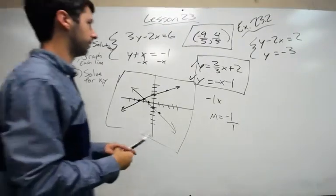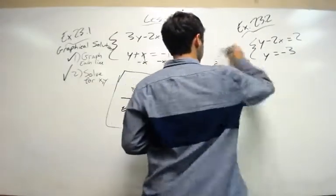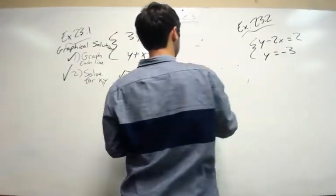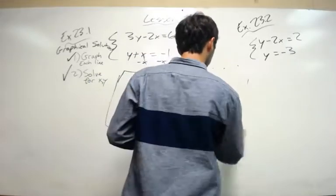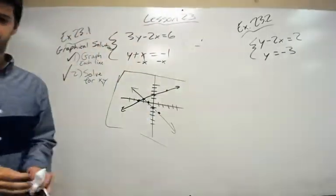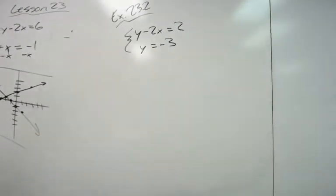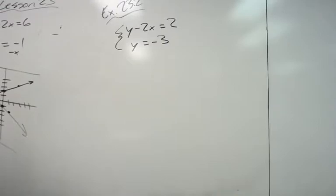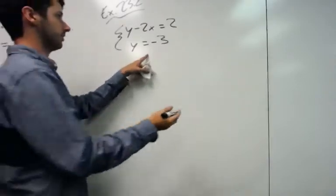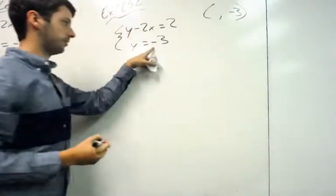Let's do one more. Example 23.2. This was actually a lot easier, so a little bit less time consuming. y minus 2x equals 2, and y equals negative 3. Well, this is nice. We already know part of our solution. Negative 3 is one point where it crosses.